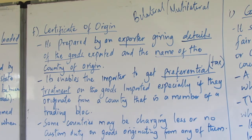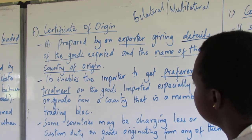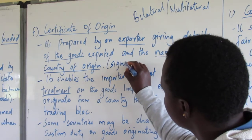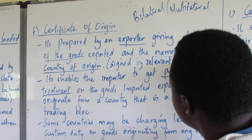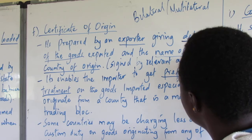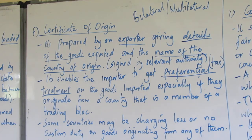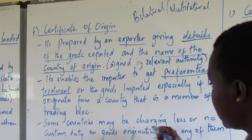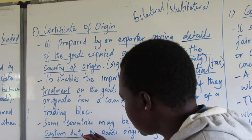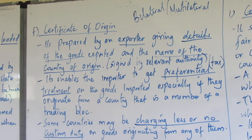For this certificate of origin to work, it must be signed by the relevant authority in the country of origin, to ascertain that the goods have come from that particular country. If that country is a member of a trading bloc, they may be charged less or no customs duty — the taxes that are levied on imported goods.